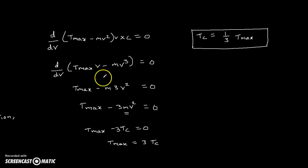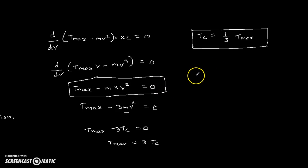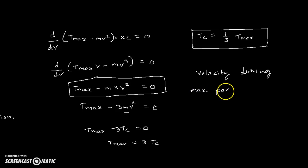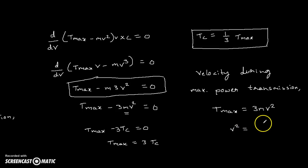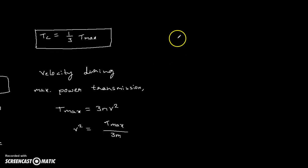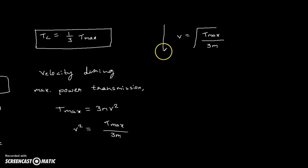Similarly, from the equation T_max minus 3mv² = 0, we can derive the velocity condition during maximum power transmission. We write T_max = 3mv², so v² = T_max / 3m. Therefore, the velocity maintained by the belt during maximum power transmission is v = √(T_max / 3m).